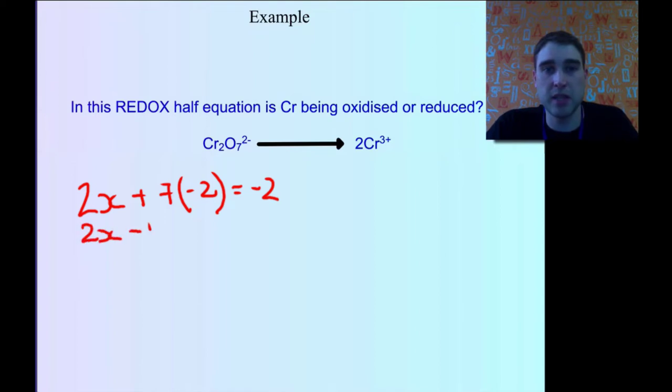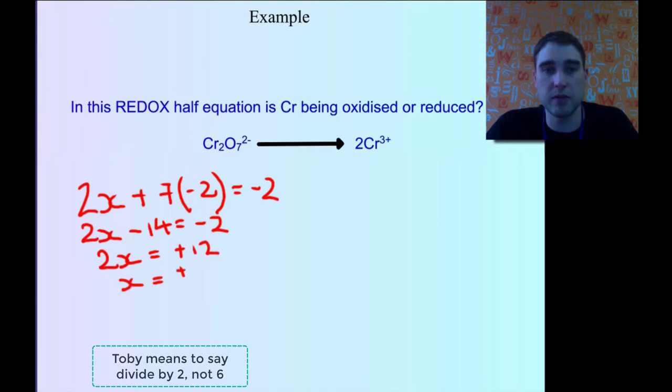So 2x minus 14 equals minus 2. Add 14 to both sides. 2x equals plus 12. x equals 12 over 2 equals plus 6.